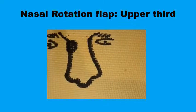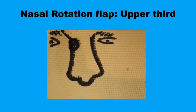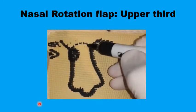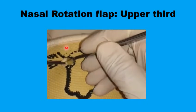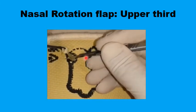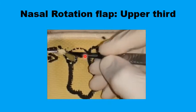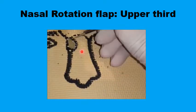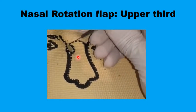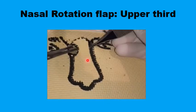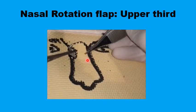Another area of the nose where rotation flaps can be used is the upper third, where a curvilinear, almost horizontal incision can be made on one side. The lesion is excised and the flap mobilized into position, with either a back cut or a small Burrows triangle applied as needed.